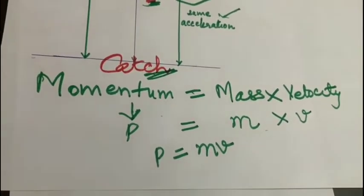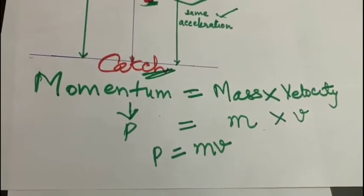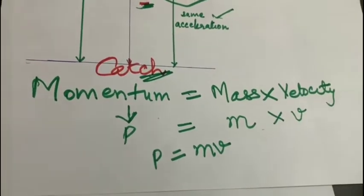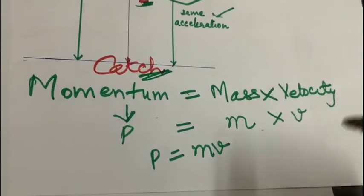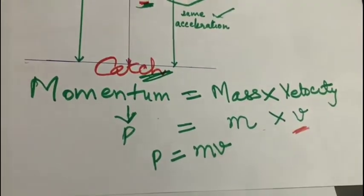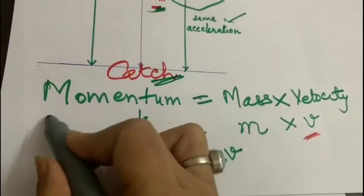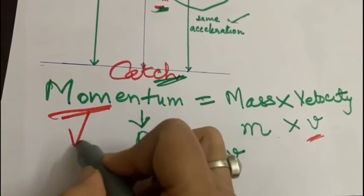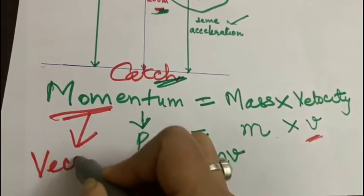And you all know that velocity is a vector quantity. So momentum is also a vector quantity.